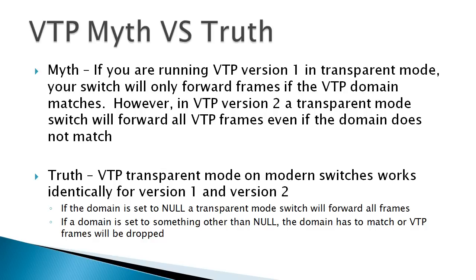The way it actually works is: if the domain name is set to null — meaning you haven't set the domain name on your transparent switch — it will forward all frames regardless of whether you're running version 1 or version 2. However, if the domain name is set to something other than null, then your domain has to match or VTP frames will be dropped. So there's really not much truth anymore to the idea that version 2 forwards everything. I'd encourage you to lab this up in your own home lab and see for yourself.